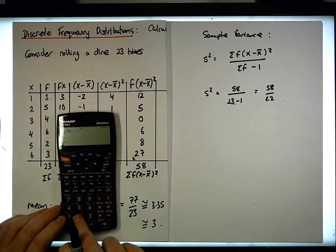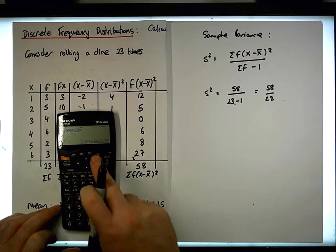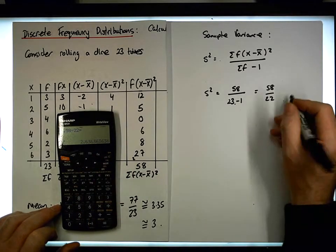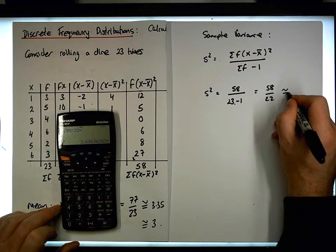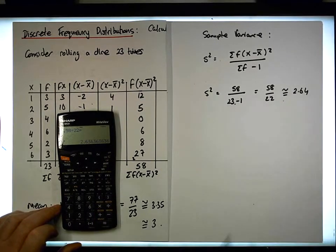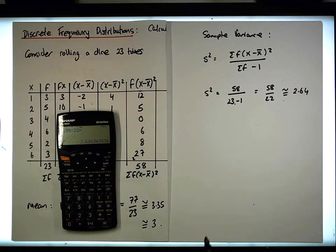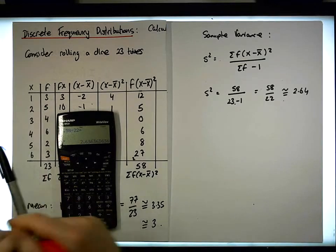58 divided by 22 gives a value of 2.64, so it's approximately equal to 2.64. That's the sample variance.